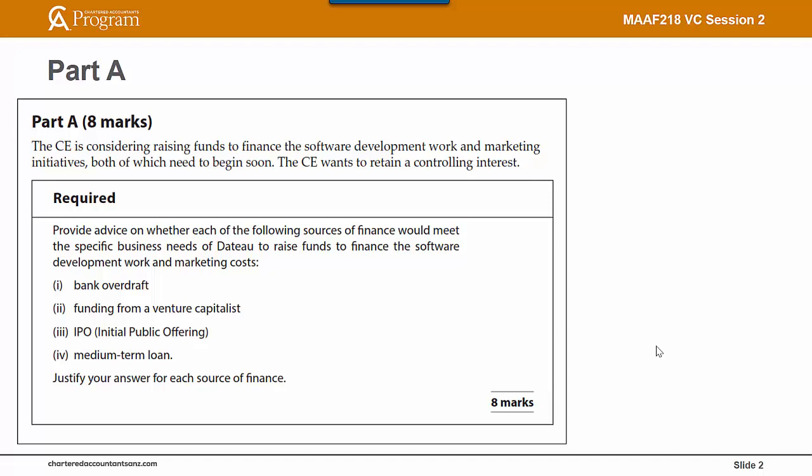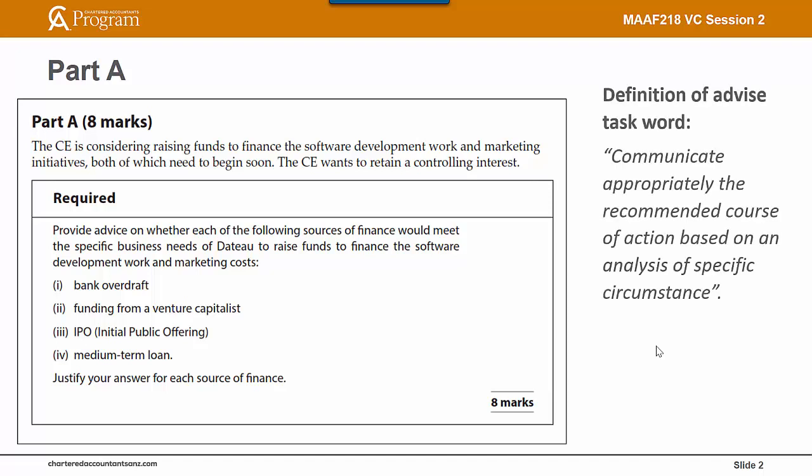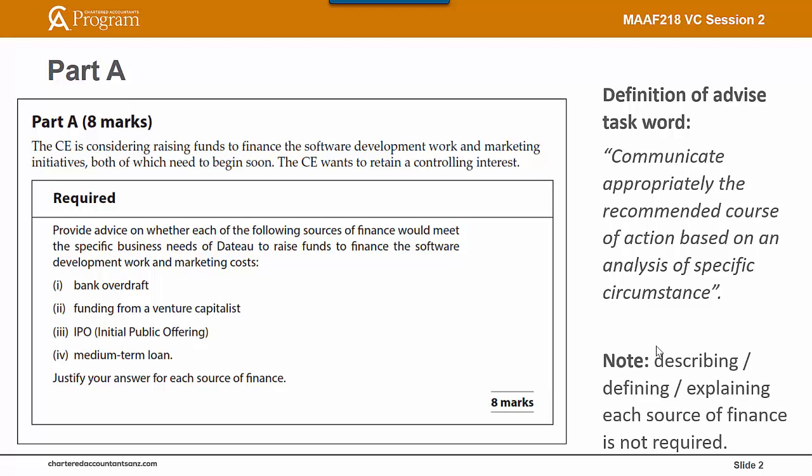There are four different sources of finance listed. The first thing is to understand the advice task word, which is to communicate appropriately the recommended course of action based on an analysis of specific circumstances. Just describing or defining each source of finance is not the requirement.